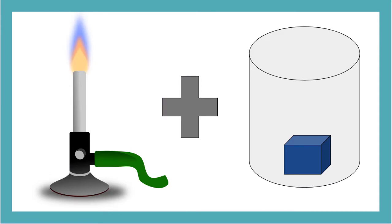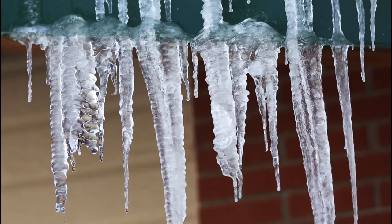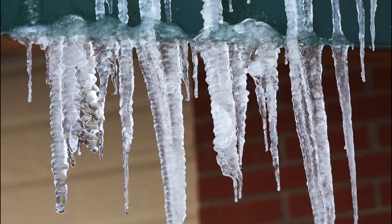The first one we will talk about is melting. Melting happens when heat is applied to a solid and it transitions to a liquid. Like icicles, which are made of solid ice melting into liquid water as the day warms up.